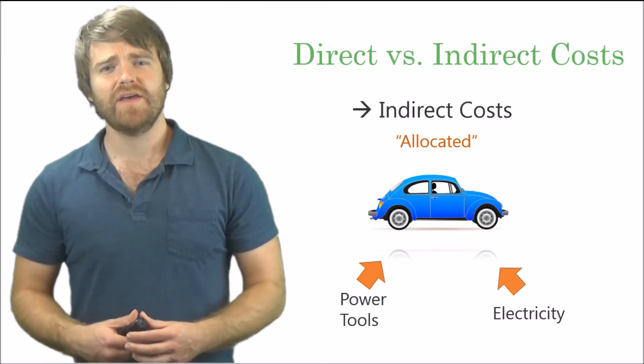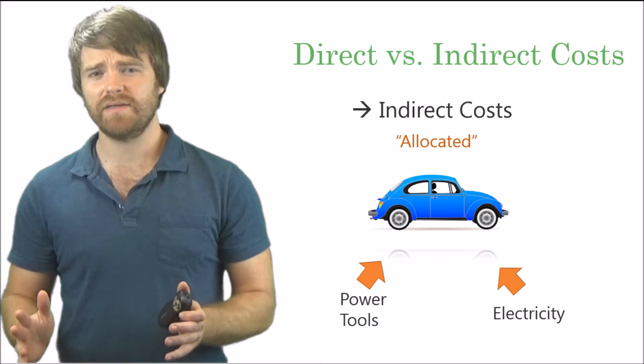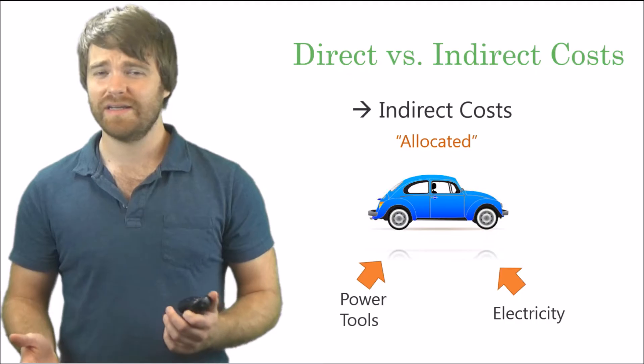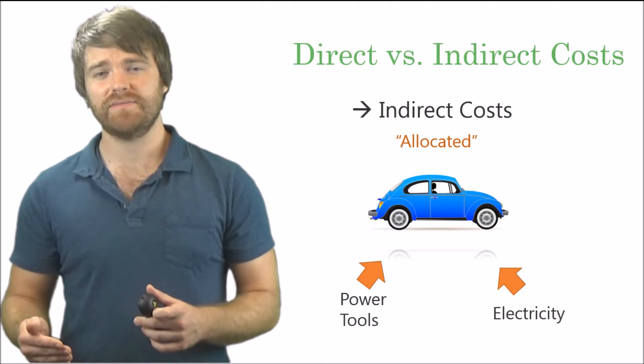Now what else? Electricity, right? You have electricity that powers that entire automobile plant. Can you really trace each little piece of electricity to each car? Not really, that'd be really tough to do, so you have to allocate it.